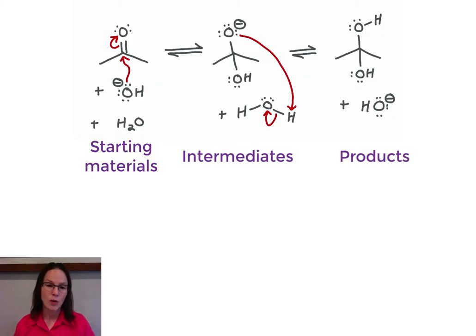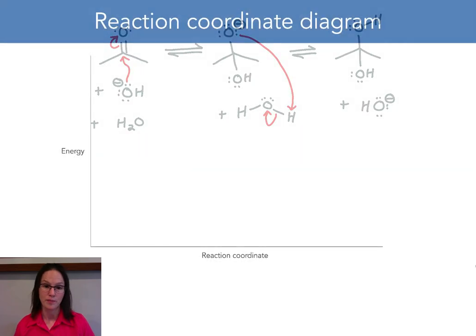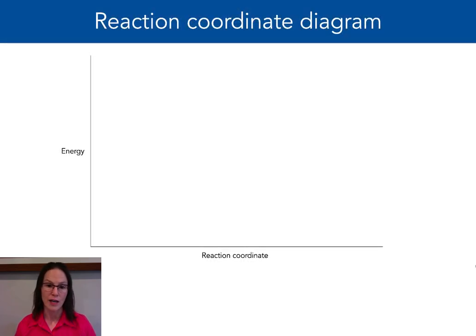Now we can locate those species on a reaction coordinate diagram. The reaction coordinate diagram has energy on the y-axis and the reaction coordinate on the x-axis. The x-axis is sometimes also called the reaction progress, but keep in mind that all reactions are reversible in principle, so the reaction coordinate diagram can and should be interpreted both from left to right and from right to left.